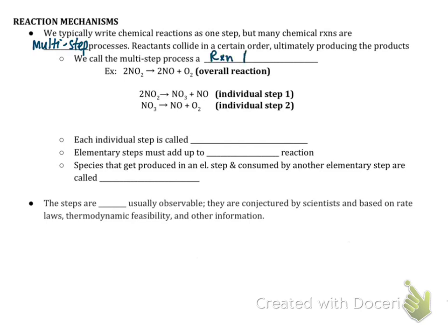We call this multi-step process a reaction mechanism. Let's look at the reaction shown here: two NO2 molecules produce two NO molecules and oxygen. This looks like a simple reaction — you might think the NO2 molecules just collide and form the products — but scientists find from data that's not the case. In fact, two NO2 molecules collide in the first step to produce NO3 and NO, and then the NO3 breaks down into NO and O2. Each of those individual steps we call elementary steps.